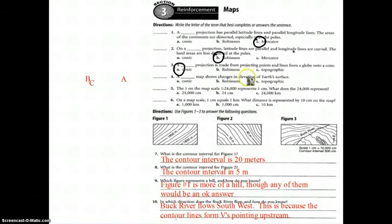The map shows changes in elevation is a topographic map. If one on a map scale is 1 to 24,000, represents 1 centimeter. 24,000 is going to represent 1 to 24 centimeters. 24,000, 24,000 centimeters. Which would be quite a few kilometers when you add them all up. On a map scale, 1 centimeter is 1 kilometer. The distance represented by 10 centimeters would be 10 kilometers. And then, last but not least, we've got figure 1, figure 2, and figure 3.